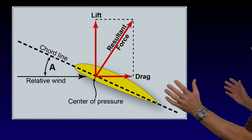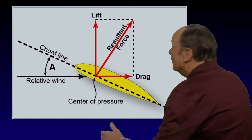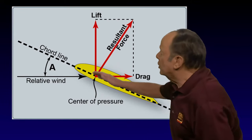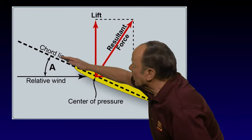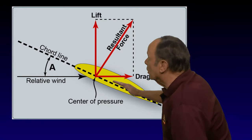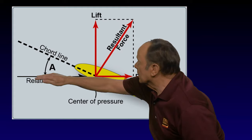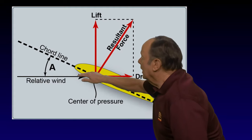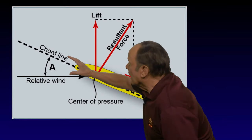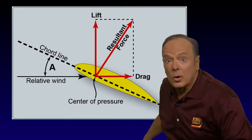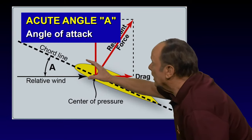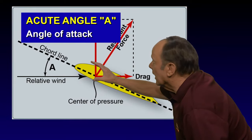Now let's take a look at this. You may be asked: what is this acute angle A here? Well, here is the chord line of the wing and here is the relative wind, and that angle is called the angle of attack. So one of the things you need to know is that this acute angle A is called the angle of attack.